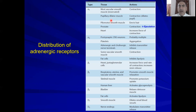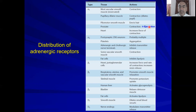Regarding the distribution of adrenergic receptors: alpha-1 receptors are mostly in vascular smooth muscle, where their activation leads to vasoconstriction. On the dilator pupillary muscle they cause contraction, leading to pupillary dilatation. On the piloerector muscle, activation causes hair erection — visible in dogs during fights. On the prostate, contraction leads to ejaculation. Remember that parasympathetic activation leads to erection. On the heart, alpha-1 activation increases force of contraction.